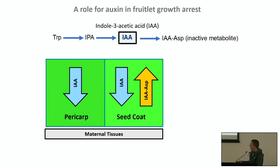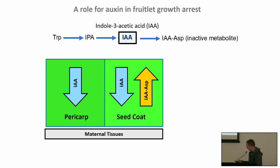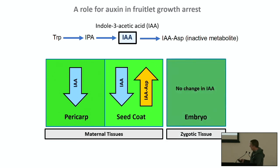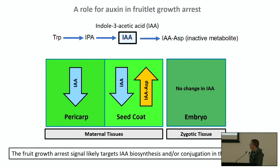When we measured auxin in the pericarp, seed coat, and embryo of normal growing fruits, we found the seed coat has about 10 to 11 fold higher auxin levels than the pericarp and embryo, indicating the seed coat is a factory for auxin production at this developmental stage. Comparing normal and arresting fruits, we see a significant decline in IAA in the pericarp and seed coat, and an increase in IAA conjugated with aspartic acid in the seed coat — a pattern similar to tomato fruit maturation. No changes were observed in the embryo.